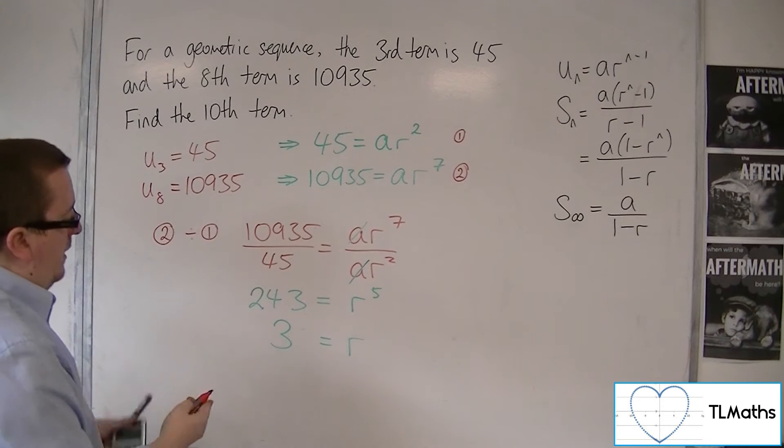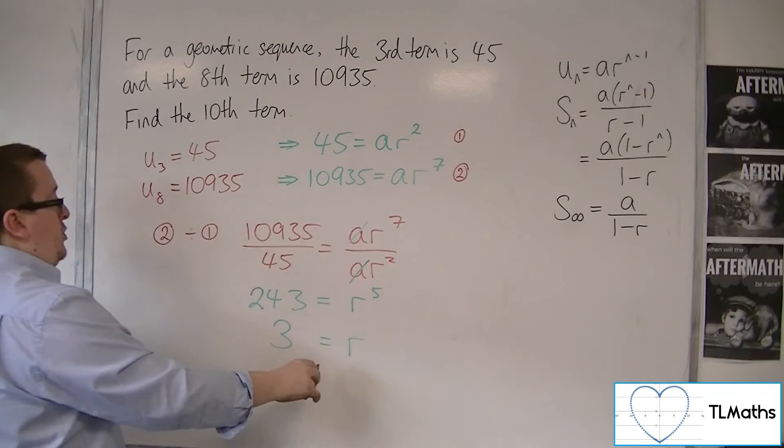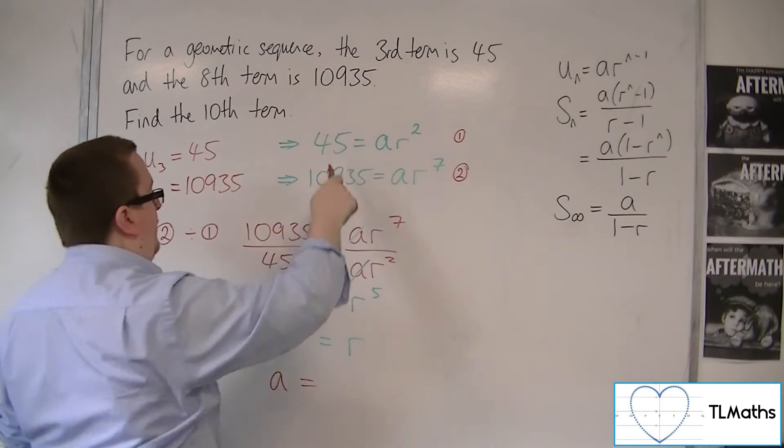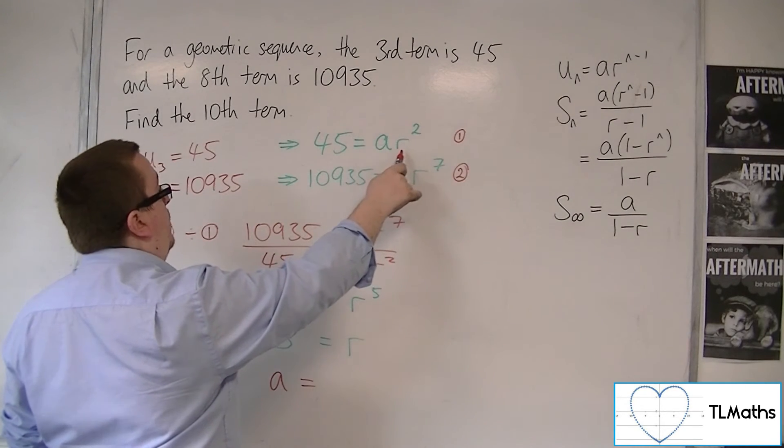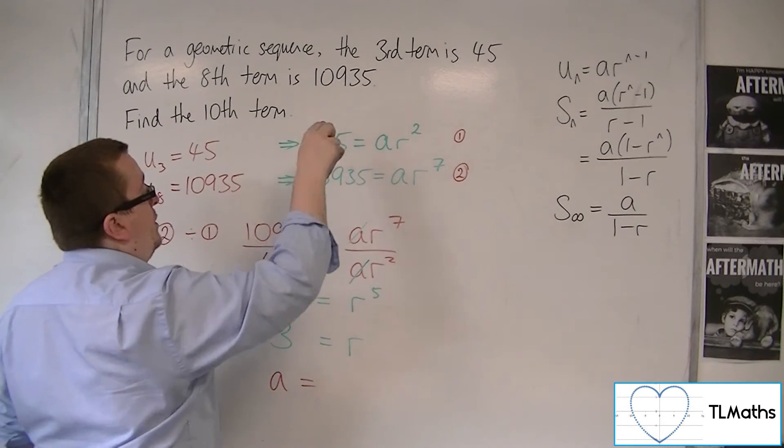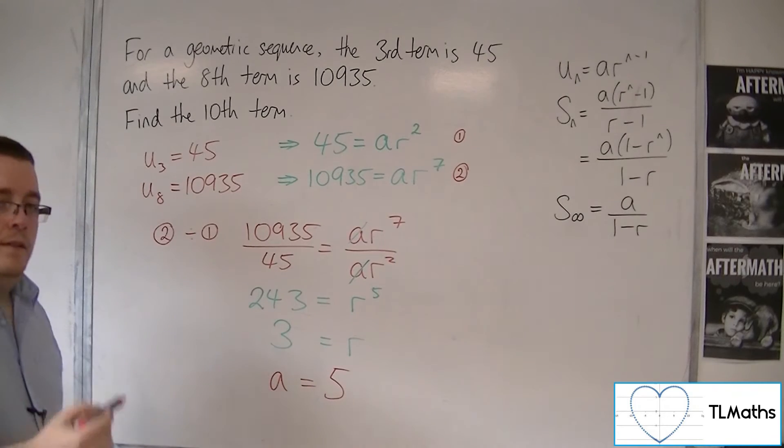So with R in place, we could now find A by substituting that back into one of the two equations. So if I substitute it into this first one, we have A times 3 squared, so 9A must be 45. So 45 divided by 9 is 5. So that is A.